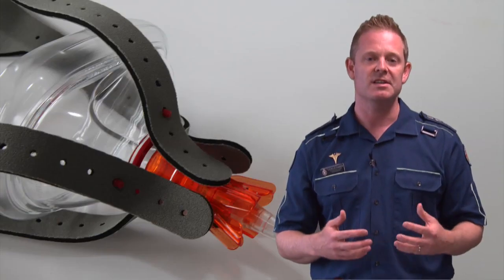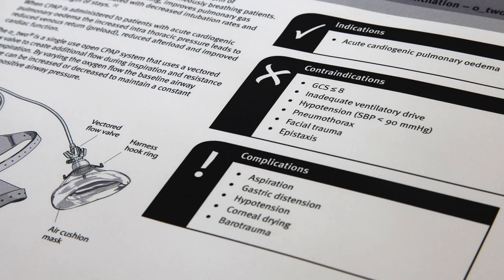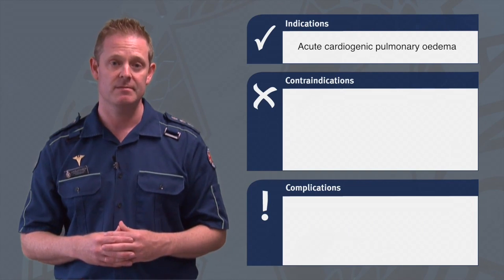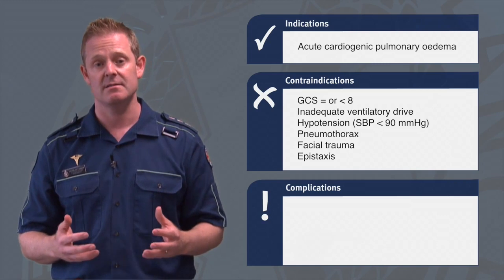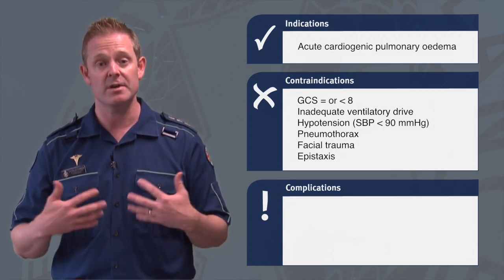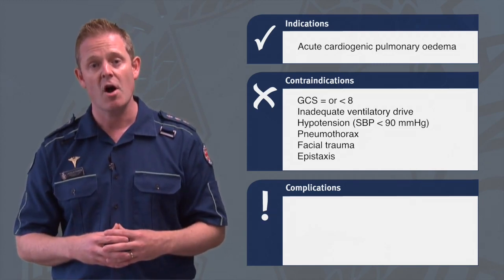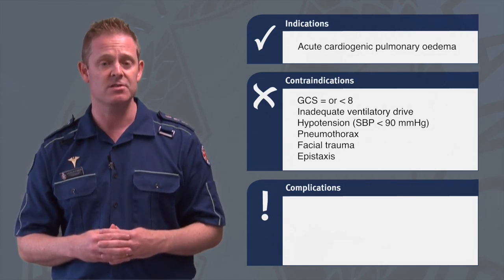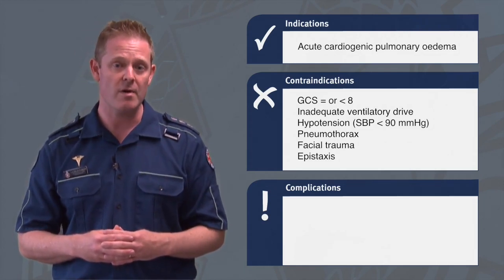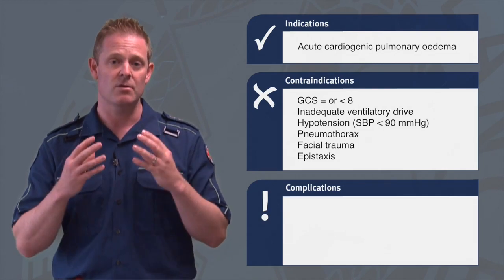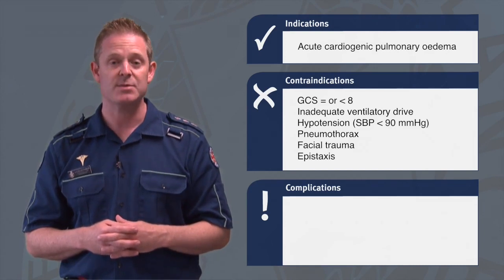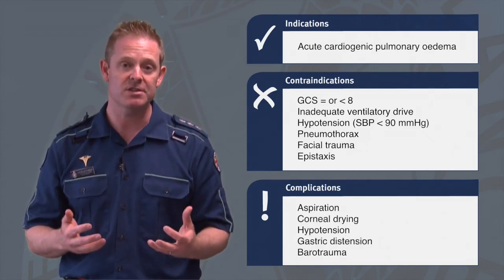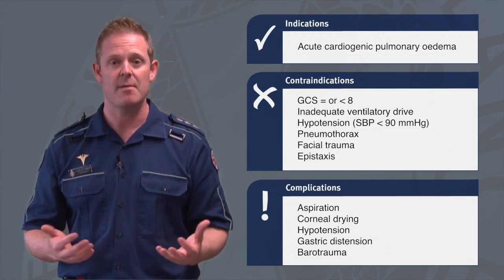The CPAP clinical practice procedure lists the following indications, contraindications, and complications. Indication: acute cardiogenic pulmonary oedema. Contraindications: a patient with a GCS of equal to or less than 8, insufficient ventilatory drive, hypotension characterised by a blood pressure of less than 90mmHg systolic, pneumothorax, and facial trauma or epistaxis. Officers must also be aware of the following complications: aspiration, corneal drying, hypotension, gastric distension, and barotrauma.